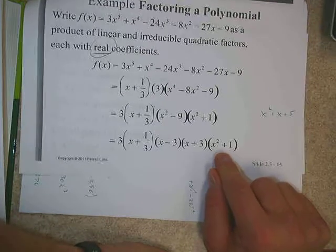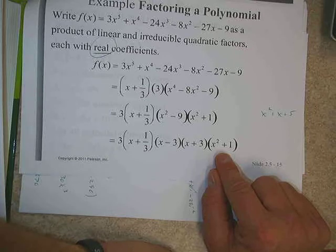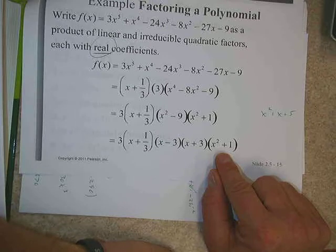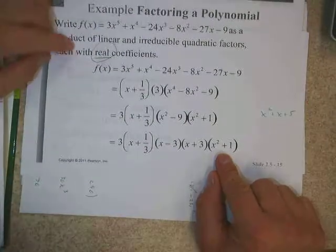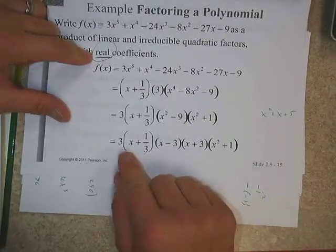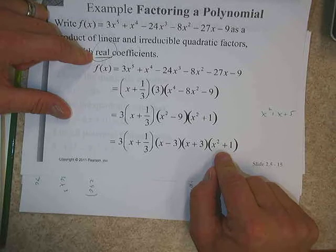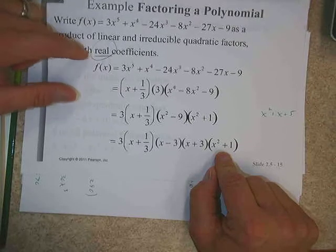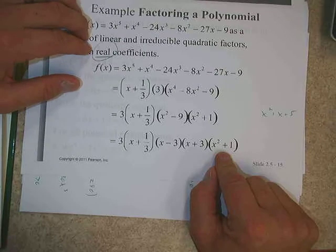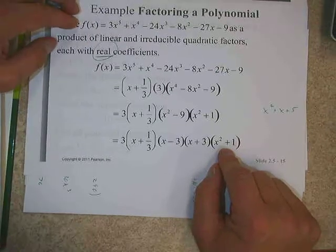Looking at this example, they found that one of the zeros was negative one-third. They took that out and were left with a quadratic. You could continue dividing and wind up with a negative 3 and positive 3, and then the remaining quotient would be x squared plus 1. Notice that x squared plus 1 is given as the final answer — because if you continued factoring it, you'd get x plus i and x minus i, which don't have real coefficients.